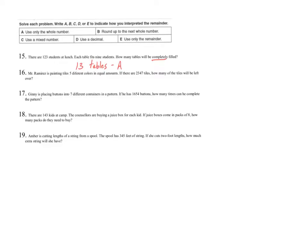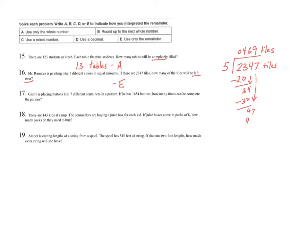Problem 16 says Mr. Ramirez is painting tiles five different colors in equal amounts. If there are 2,347 tiles, how many tiles will be left over? That tells me right away all I care about is the leftover tiles — the remainder. Taking 2,347 tiles split into groups of five colors: 5 does not go into 2; it goes into 23 four times; 5 goes into 34 six times; and into 47 nine times. There are 2 tiles left over. That is my answer — 2 tiles left over — Strategy E.